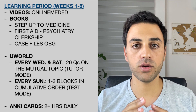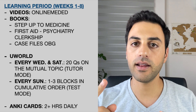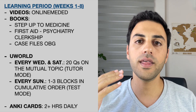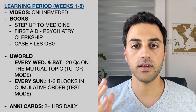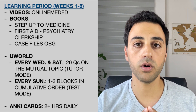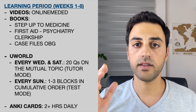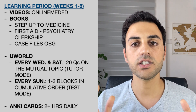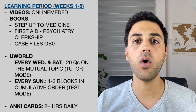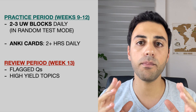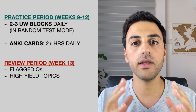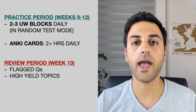Let's do a quick recap. During the first eight weeks, I used online Medit videos and the books Step Up to Medicine, Psychiatry Clinical Clerkship, and Case Files OBG to go through all Step 2 CK topics. Every Wednesday and Saturday I did around 20 UWorld questions in tutor mode, and every Sunday I did one to three cumulative blocks in test mode. Every day I did at least two hours of Anki flashcards, unsuspending each matching topic and eventually mixing all cards together. Weeks 9 to 12, I did two to three UWorld blocks per day in random test mode and maintained daily Anki cards. The last week was for review. That's my 13-week plan, which helped me obtain my ophthalmology residency.